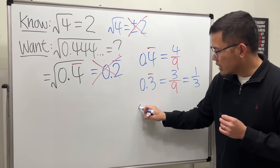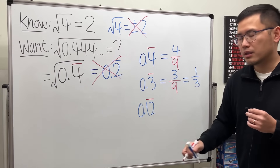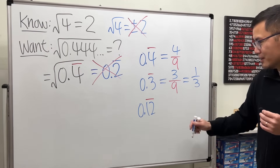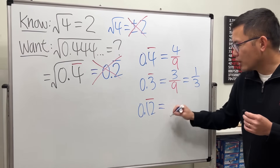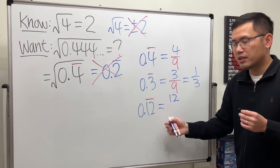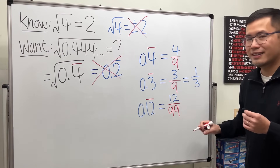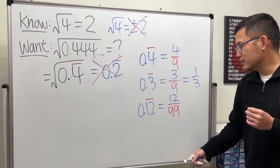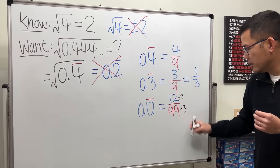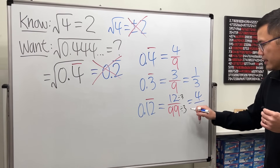But what if we have 2 digits? Say 0.12 repeating — 0.121212 forever. Same thing, but be careful. Since 1 and 2 are repeating, put 12 on top. Because we have 2 numbers repeating, this time we divide by 99. We can reduce by 3, divide top and bottom by 3, and we get 4 over 33.